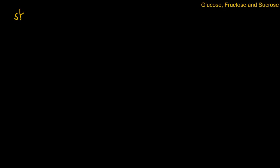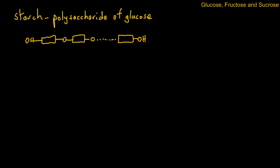Today we're going to take a closer look at glucose, fructose and sucrose. For the production of these three sugars, the starting point is normally starch, and this of course is a polysaccharide of glucose, and we can show that as a chain of glucose units.